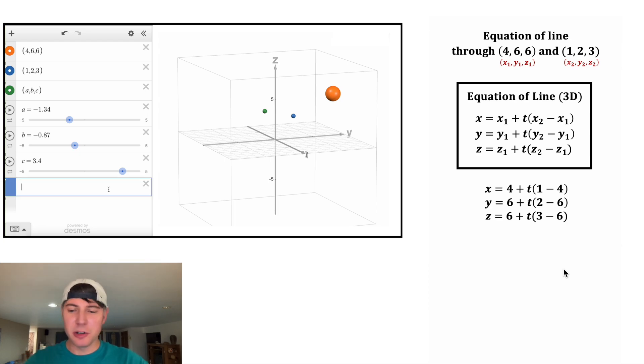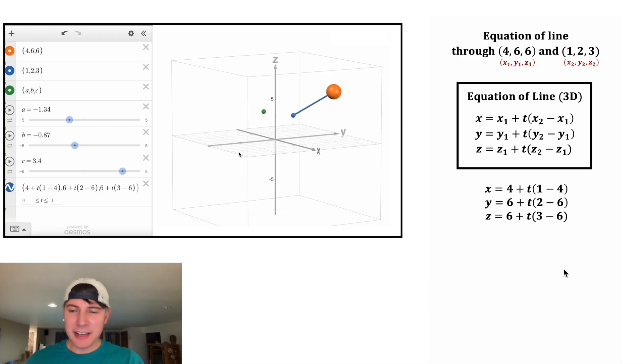The way we plug in that parametric equation is we make like a point with commas, but in the place of x, so it'll be x, y, z. But in the place of x, we're gonna put in the parametric equation. It was 4 plus t in parentheses (1 minus 4). And then we'll do the same thing for y. It was 6 plus t times (2 minus 6). And it'll do the same thing for z, which was 6 plus t times (3 minus 6). And now you see that it made that line. Let's make it blue. And there's the line right there. So I turn it off, it's gone. And then I turn it on, it shows up. So that gave us that line.